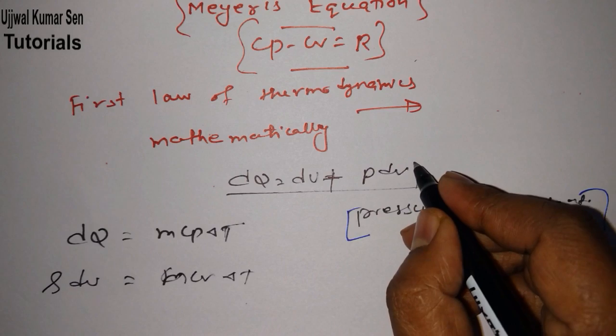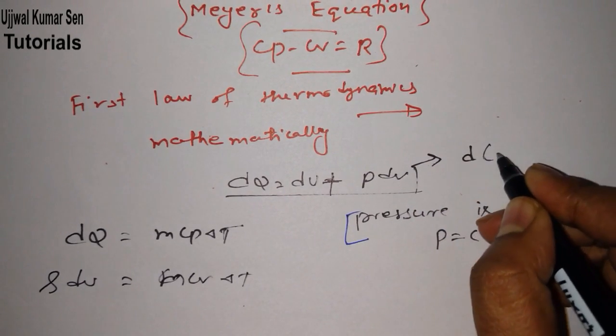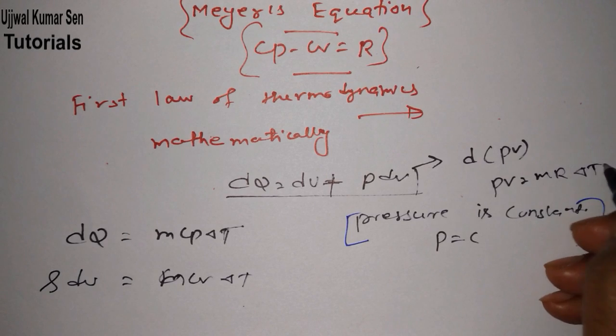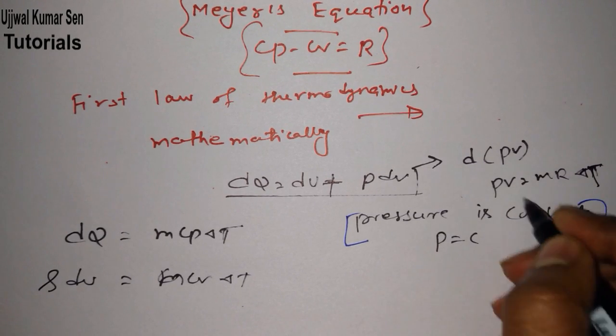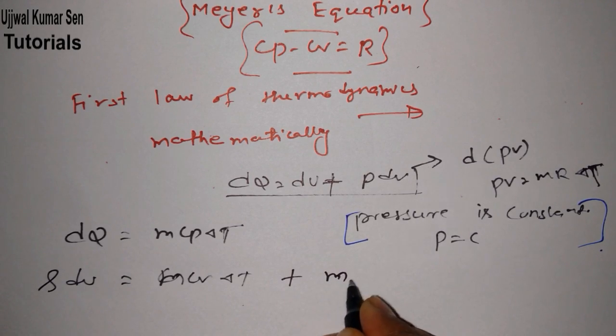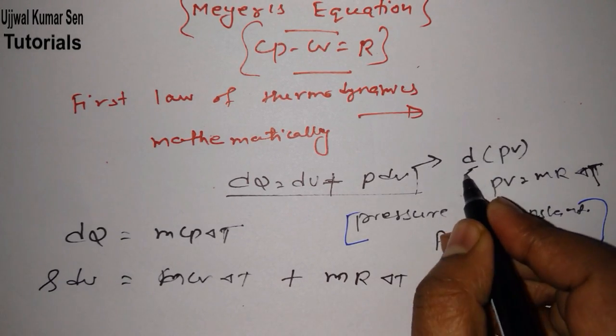From here what we can say, dPV and PV is equal to what? mR delta T, mR T.